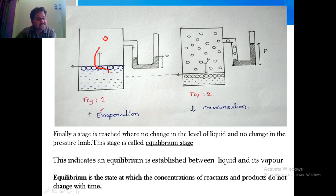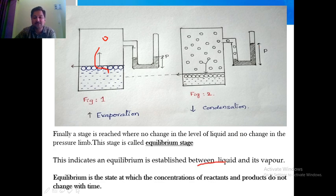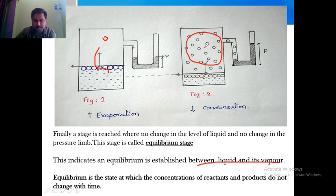Finally, it reaches a stage where there is no change in the level of liquid and no change in pressure. This stage is called the equilibrium stage. After the equilibrium is established, there is no decrease in the level of liquid and no increase in pressure. The amount of vapor formed and the amount of liquid both remain constant once equilibrium has been formed.